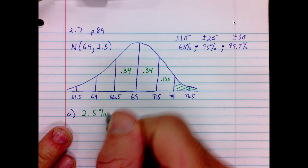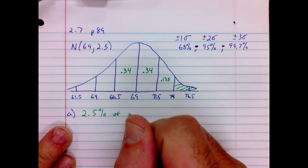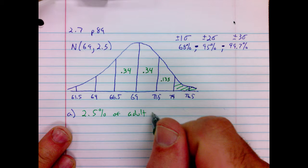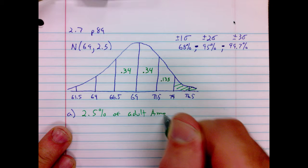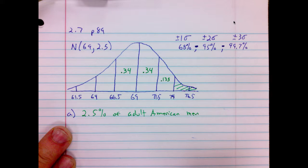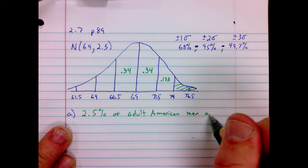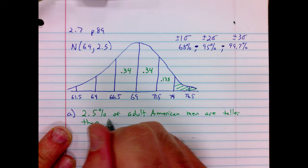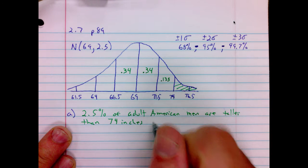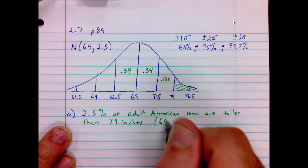Answer to A: 2.5% of adult American men are taller than 74 inches, and that is 6 foot 2.